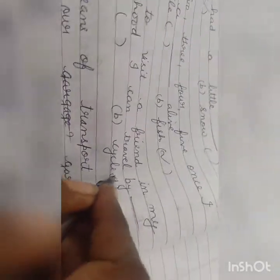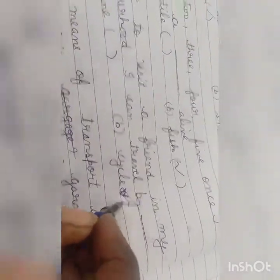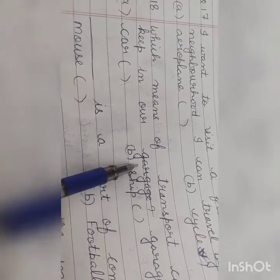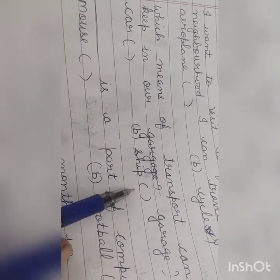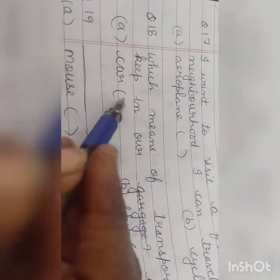See the seventeenth one. I want to visit a friend in my neighborhood. मुझे अपने पड़ोस में मेरे दोस्त से मिलने जाना है. I can travel by. हम किस के उपर जा सकता हूँ? Aeroplane में जाना पड़ेगा कि cycle पे? Cycle. Very good. Put a tick mark on cycle. See the next one. Which means of transport can we keep in our garage? Garage में कौन सा means of transport हम रख सकते हैं? Car के ship. हम car रख सकते हैं. So put a tick mark on car.